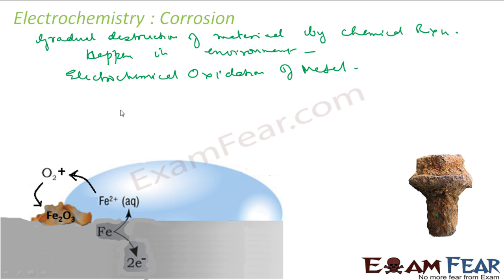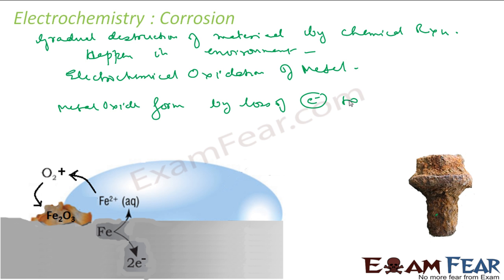In corrosion, generally the metal oxide is formed by the loss of electron to oxygen. Metal oxide is formed by loss of electron to oxygen, and they form oxide. For example, corrosion of iron — it happens in the presence of water and oxygen.